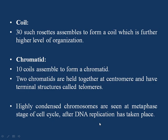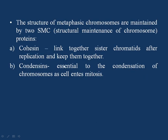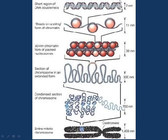Highly condensed chromosomes are seen at the metaphase stage of the cell cycle after DNA replication has taken place. The structure of the chromosome at metaphase is maintained by two important proteins called SMC proteins — cohesin, which links together two sister chromatids after replication and keeps them together, and condensin, which is essential for the condensation of chromosomes as the cell enters mitosis.